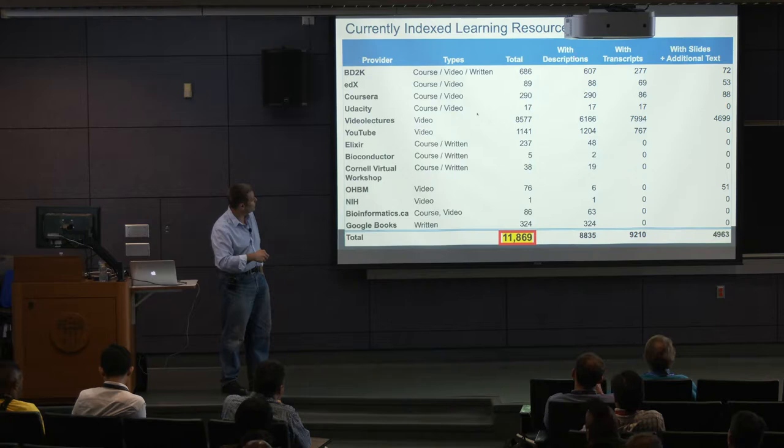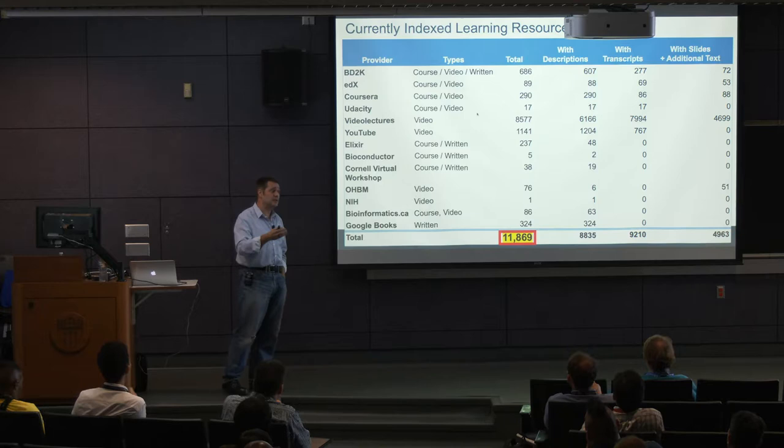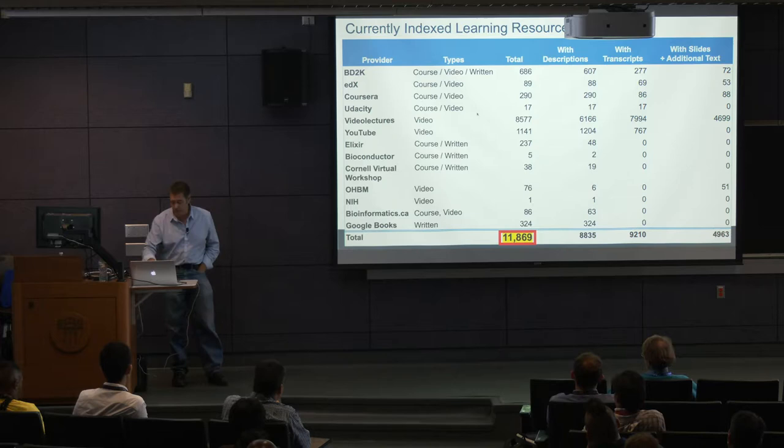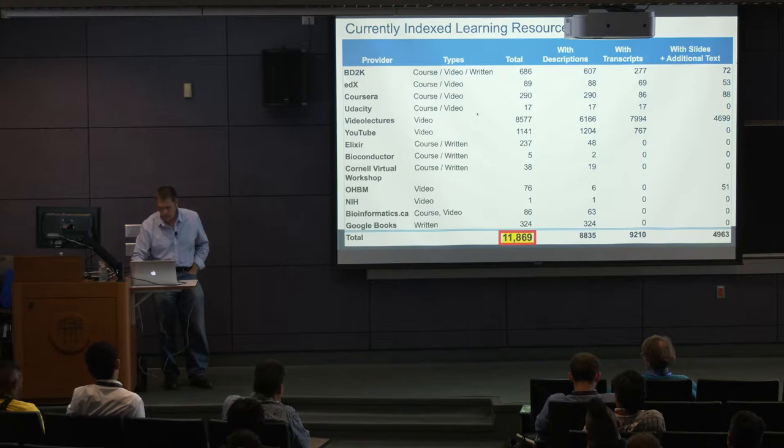The information we extract includes all the metadata: the title, instructors, organizations, and syllabi. We have a breakdown here — we have just descriptions for some, transcripts for others. If there is a video with a closed caption, we will take that too, because it helps us classify what the video is about. If there are slides, like in video lectures sites, we get those as well, extracting text to help classify. In the current index we have about 12,000 resources.